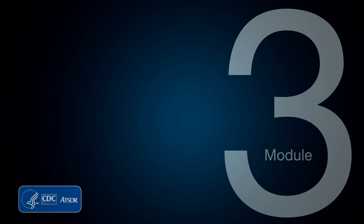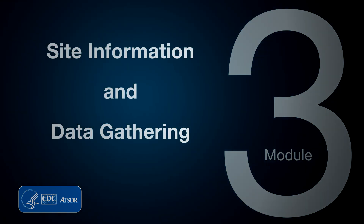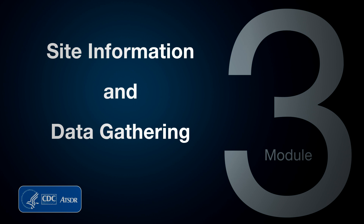I'd like to welcome you to Module 3, Site Information and Data Gathering. This module is the third in an eight-module series about ATSDR's method to evaluate health impact from exposure to environmental contaminants. This method is known as the Public Health Assessment Process, or PHA.